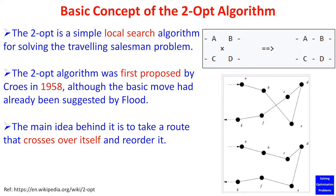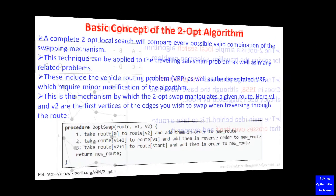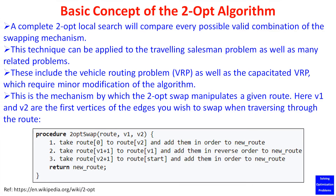Here is a basic concept of the two-opt algorithm. The two-opt algorithm is a simple local search algorithm for solving the Traveling Salesman Problem. It was first proposed by Croes in 1958, although the basic move had already been suggested by Flood. The main idea behind it is to take a route that crosses over itself and reorder it. A complete two-opt local search will compare every possible valid combination of the swapping mechanism.